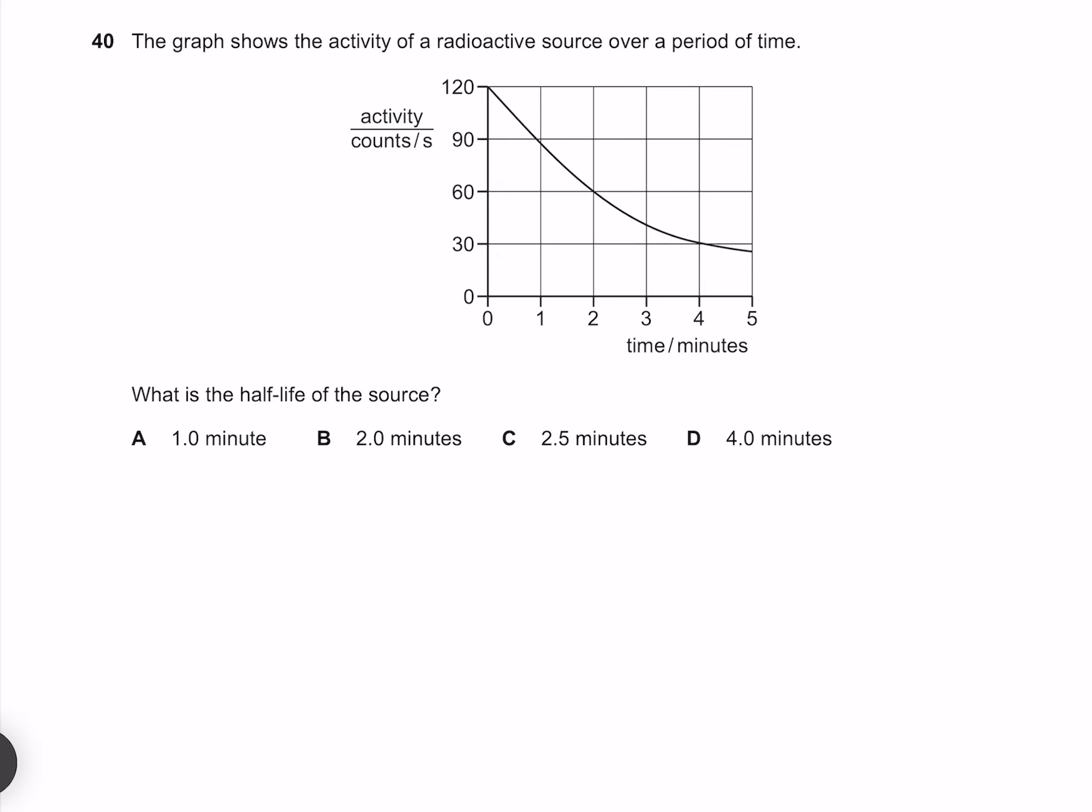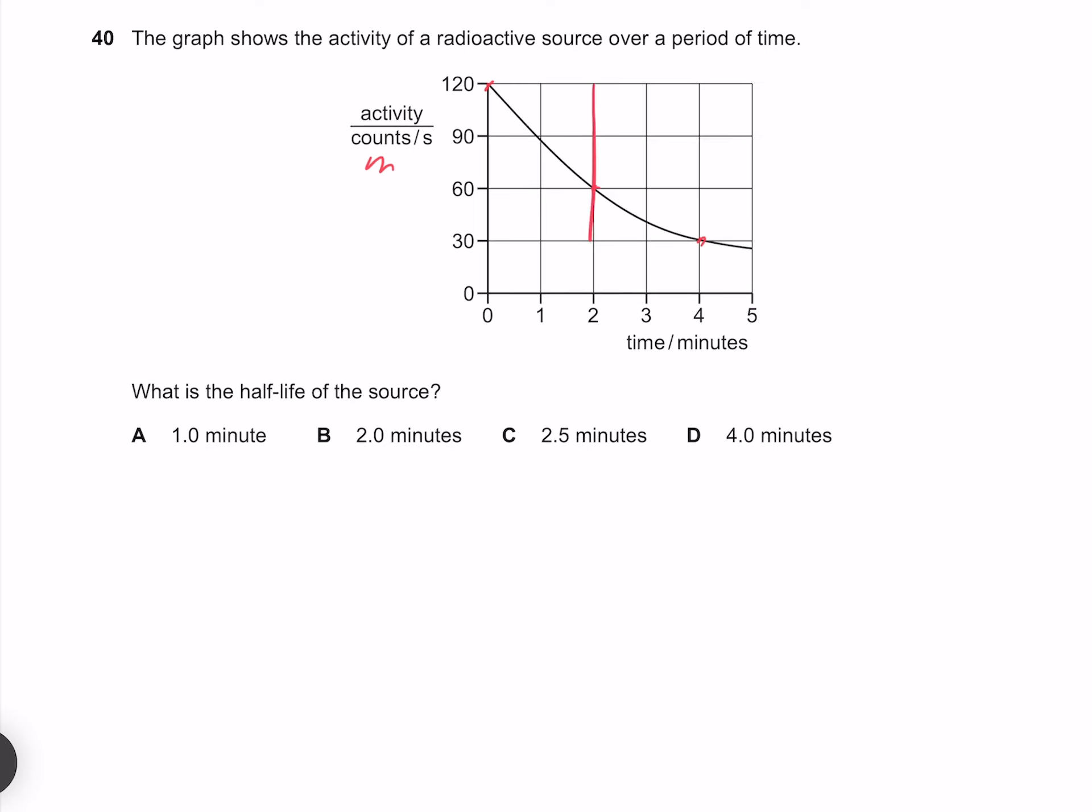The graph shows the activity of a radioactive source over a period of time. What is the half-life of the source? Half-life is defined as the time for a 50% reduction in a radioactive nuclide which can be indicated by its radioactivity measured in counts per second. So if we start at 120, 50% of that is 60, and 50% of that is 30. What you might notice is that each halving is accompanied by a two minute duration. Our half-life is therefore two minutes.